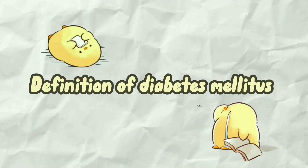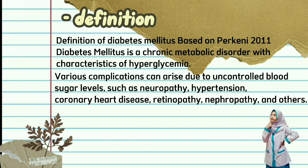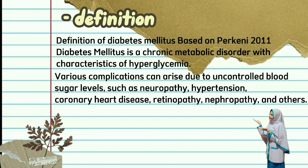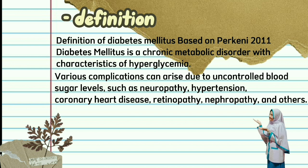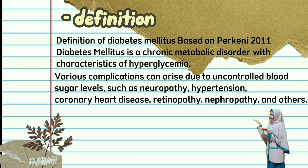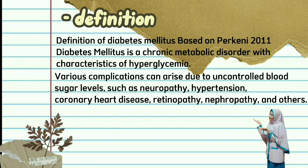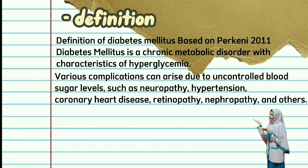Definition of Diabetes Mellitus. Based on Perkeni 2011, Diabetes Mellitus is a chronic metabolic disorder with the wide characteristic of hyperglycemia. Complications can arise due to uncontrolled blood sugar levels, such as neuropathy, hypertension, coronary heart disease, retinopathy, neuropathy, and others.